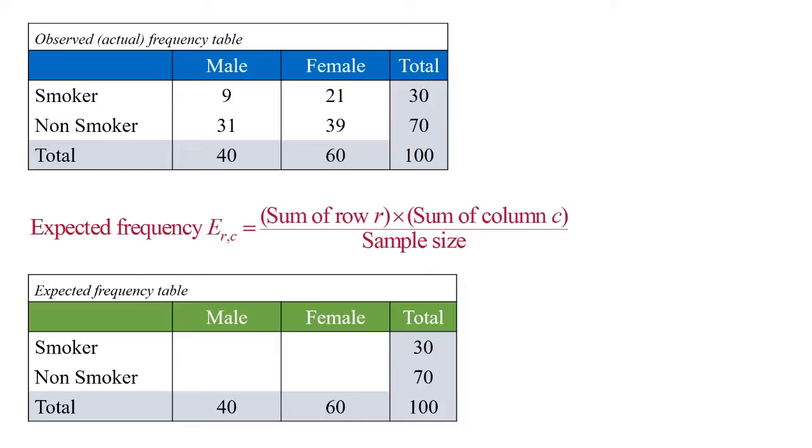The expected or theoretical frequency table is colored green and still has the same male, female, smoker, and non-smoker categories. The marginal values are exactly the same as the actual or observed frequency table. It's the values within the table that will be different.